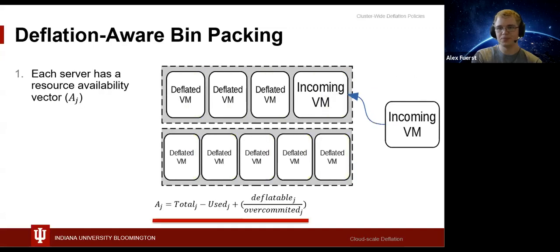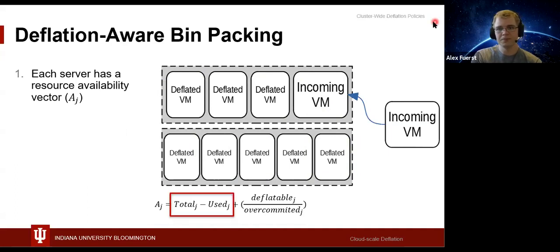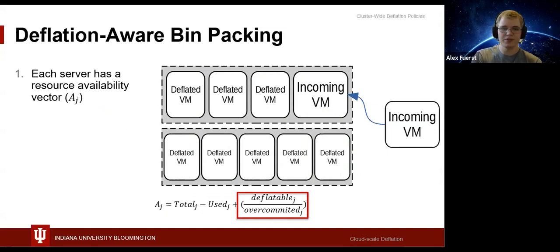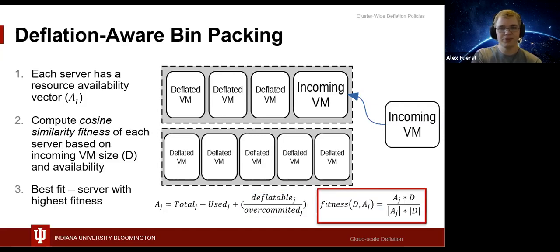The various available resources — CPU, memory, and I/O — on each server are tracked in availability vectors A_j. These are computed from a formula taking the total physical server resources less those already committed to VMs, then adding the still-deflatable resources from its VMs scaled by the server's existing over-commitment. We compute the cosine similarity fitness of placing the VM on each server based on the VM's requested resources D. The best-fit algorithm then chooses the server with the highest fitness to place the VM on.